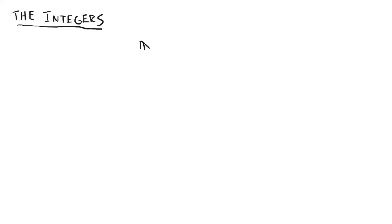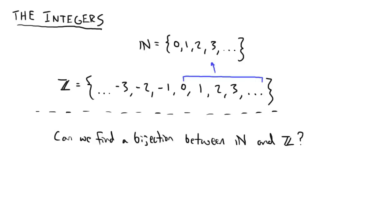So far, we've been working with the natural numbers, but if we add on all the negative numbers, we'll get the integers, which we call Z. Despite the fact that N is a subset of Z, we have to wonder, can we find a bijection between the natural numbers and the integers?